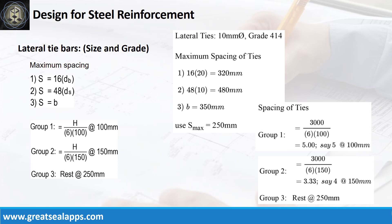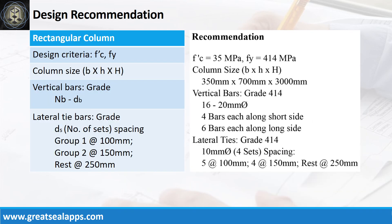Follow the given computations for lateral ties. Design recommendation as follows: Fc prime equals 35 MPa, Fy equals 414 MPa. Column size is 350 mm by 700 mm by 3,000 mm. Vertical bars of grade 414: 16 pieces, 20 mm bar. Lateral ties of grade 414, 10 mm bar, with spacing sets: 5 at 100 mm, 4 at 150 mm, rest at 250 mm.